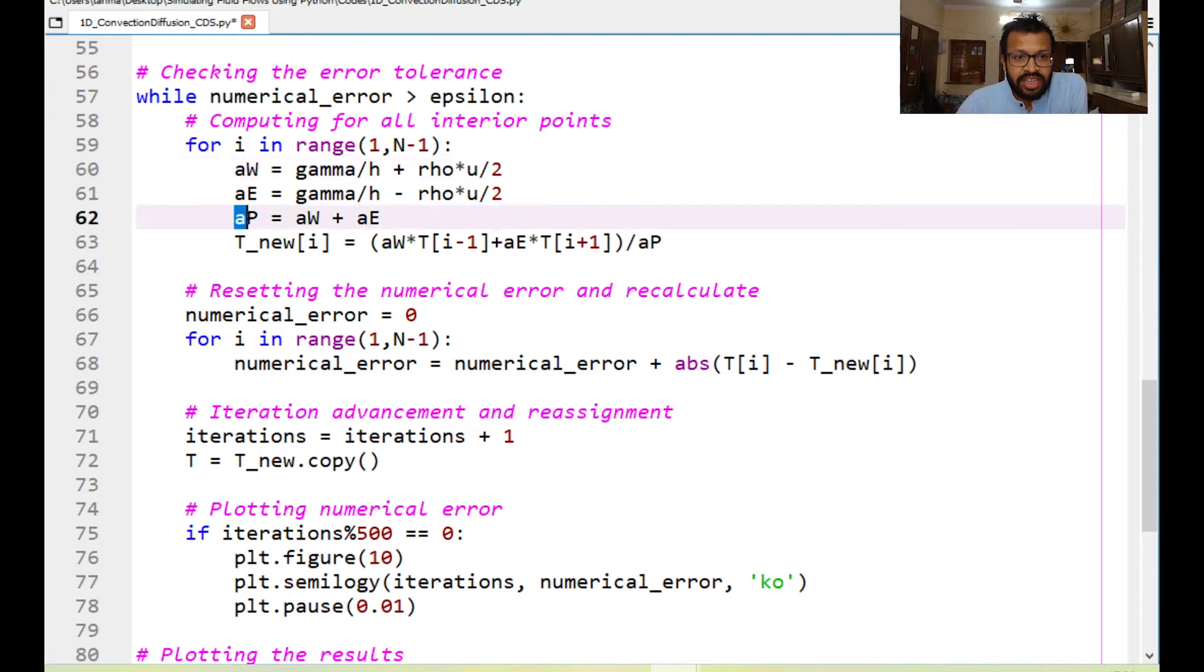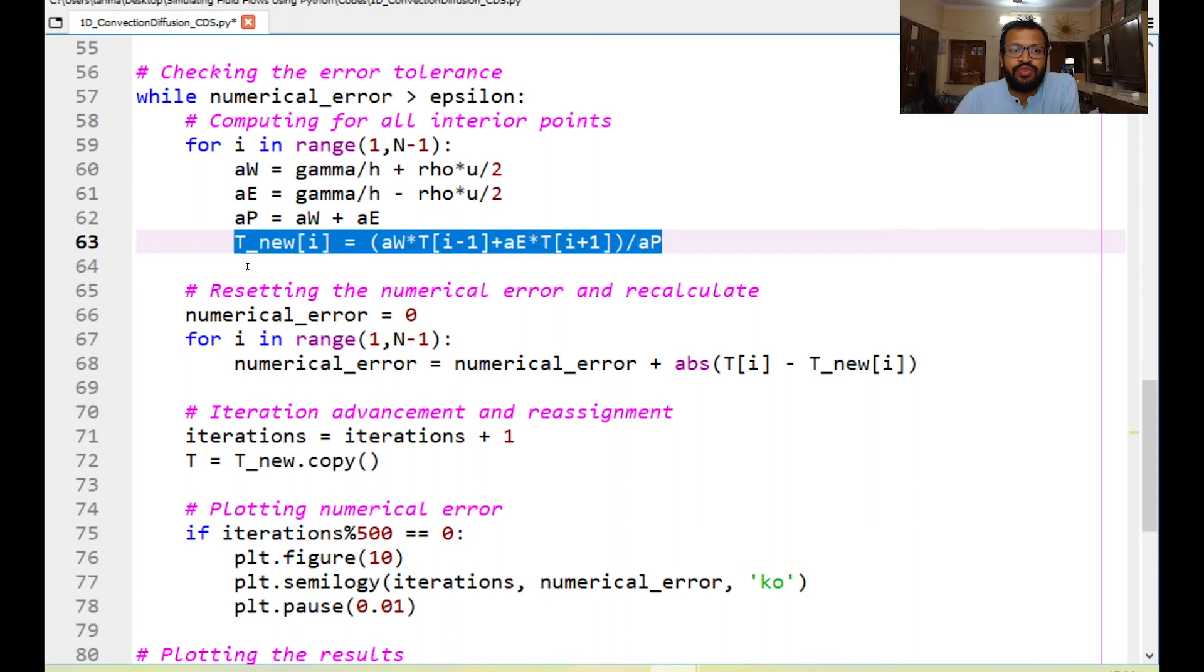And correspondingly we have AP being equals to AW plus AE and finally we can obtain the new value of temperature at the point P as AW into TW that is the west grid point is corresponding to an iteration index of I minus 1 and AE times TE where the index of the east point is I plus 1 divided by AP. So this is nothing but the generalized formula that we had looked at for the finite volume formulation.